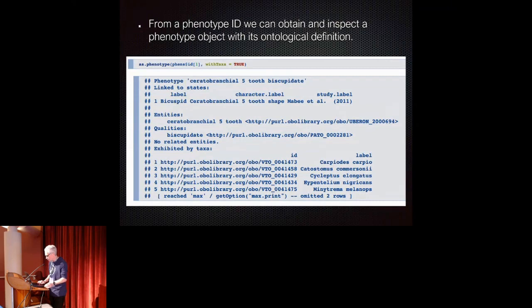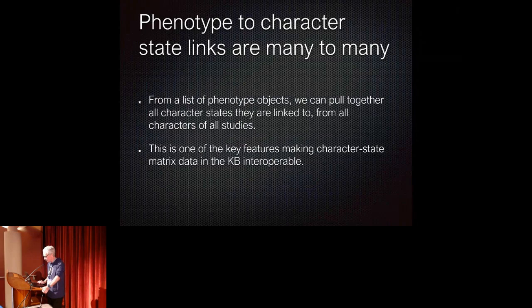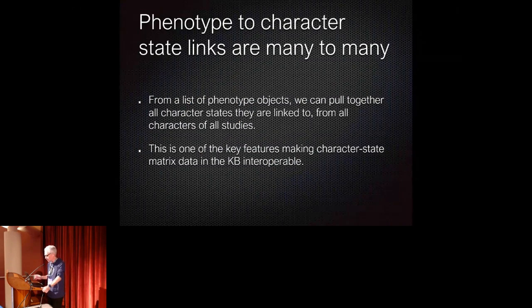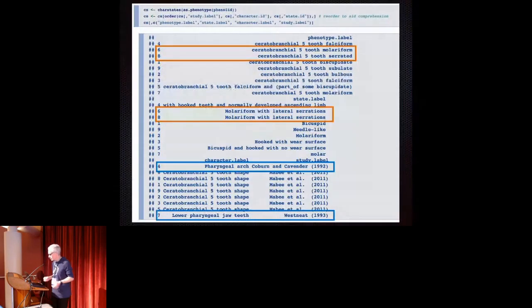And this is linked to the entity term from Uberon and the quality term from PATO that formalize the semantics of the phenotype. So just to keep in mind, the links between character states and phenotypes is an N-to-N relationship, really. And we can show, and this is one of the key features, about making the character state data interoperable across all the data matrices rather than being siloed in one data matrix. So we can, for example, for this one, pull together all the states and then can observe that there's now other studies here being pulled in as well rather than the one I started with. That's one of the two N's that I was referring to. And also that one of the states here has links to two phenotypes, because it really combines in its description, in its natural language description, two actual qualities.